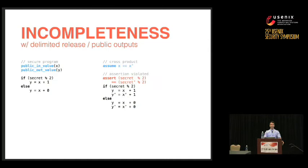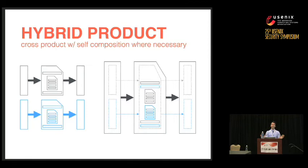The cross-product approach is not complete on its own: if the program legitimately branches on a secret whose output is later declassified, the cross-product construction signals a false violation because the two programs are not in sync. Our overall solution — selective self-composition — bases the construction on the efficient cross-product and limits self-composition to the small parts of the program that actually branch on secrets which are later justified by declassification.